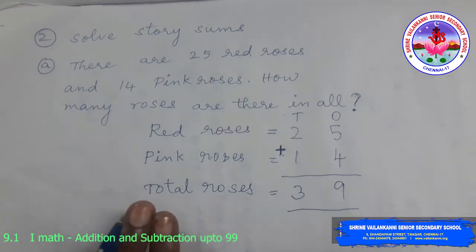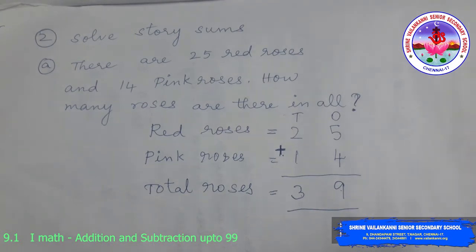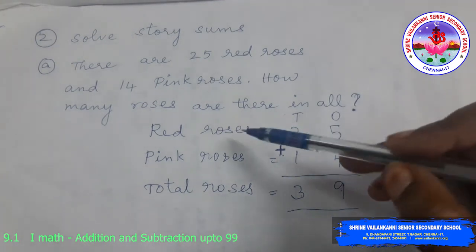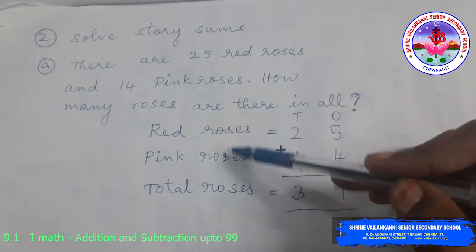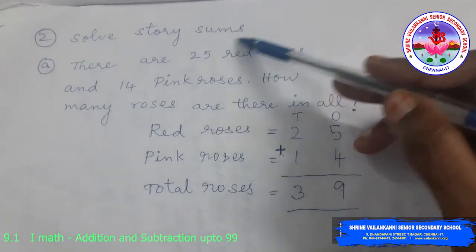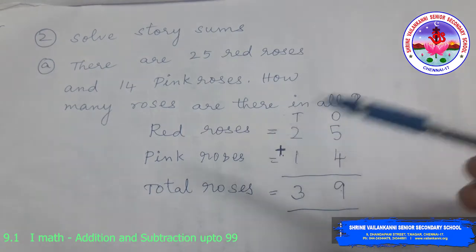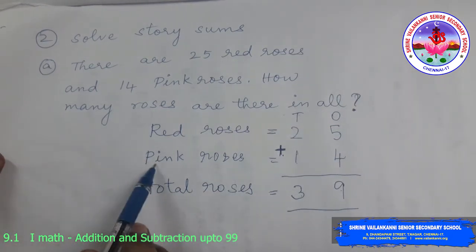This is how we solve our story sum. Previously, you just wrote the numbers. But hereafter, you try to practice writing the steps like this. That is, you just pick out the words. You can also write number of red roses, number of pink roses.